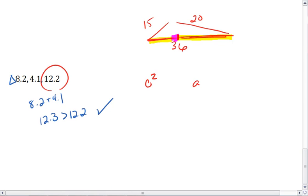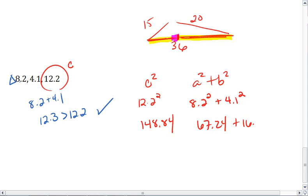Lastly, again we're going to look at c squared and then a squared plus b squared. Our c value is the 12.2. We get 8.2 squared plus 4.1 squared. 12.2 squared is 148.84, 8.2 squared gives us 67.24, 4.1 squared gives us 16.81.